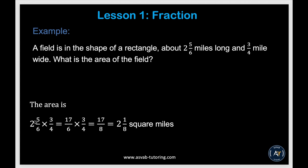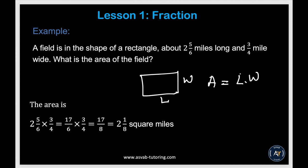Now let's apply multiplication and division to word problems. A field is in the shape of a rectangle, 2 and 5 miles long and 3 quarter miles wide. What is the area? Area equals length times width. Convert the mixed number to an improper fraction, then multiply top to top and bottom to bottom and divide. That gives you 2 and 1 sixth square miles.